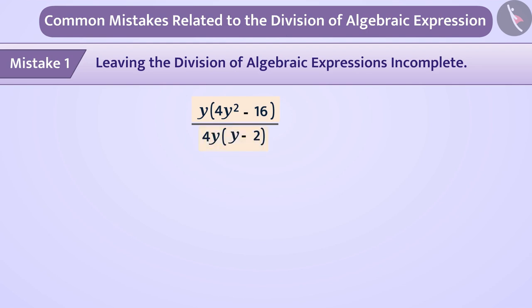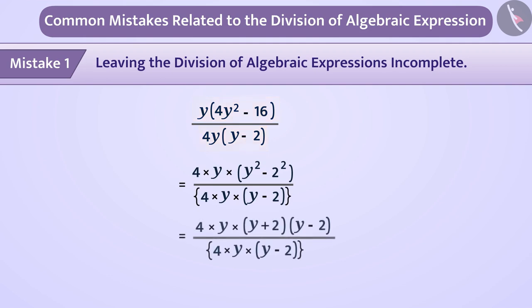To avoid this mistake, we can factorize the numerator and denominator while dividing algebraic expressions. This allows the common factors to be cancelled by the method of cancellation, and thus the correct result can be obtained.